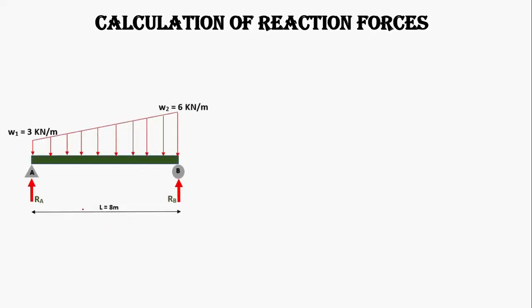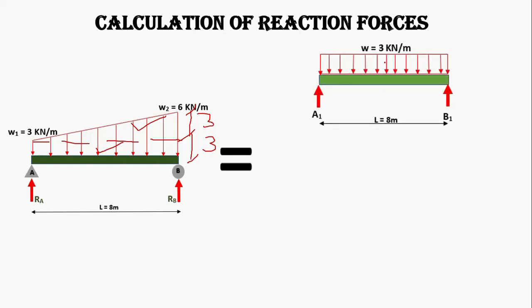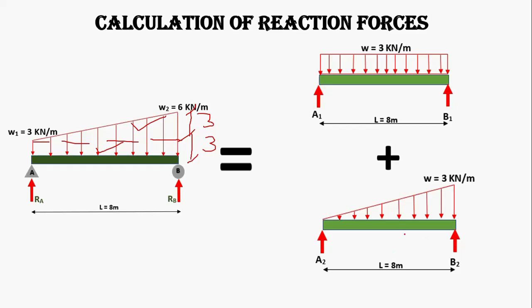We have a beam of 8 meter length with trapezoidal loading. At A, the load is 3 kN per meter, increasing uniformly up to B at 6 kN per meter. If we divide this loading into two parts, we have a rectangular load of 3 kN per meter and a triangular load of 3 kN per meter. So this will be the UDL of 3 kN per meter plus the triangular load of 3 kN per meter, both over 8 meters.